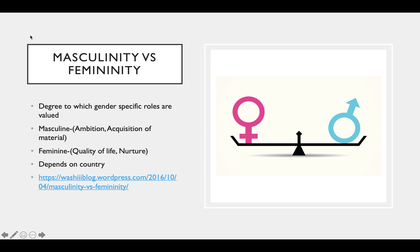The second dimension is masculinity versus femininity — the degree to which gender-specific roles are valued. Masculinity is associated with ambition and acquisition of material goods, while femininity relates to nurture and quality of life. Cultures differ in whether men are expected to be wage earners and women caretakers, or whether there is greater gender equality, such as having a female president. In Paul's survey, students indicated there should be more of a feminine dimension.